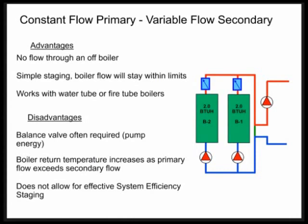The advantages being there's no flow through an off boiler. There's simple staging. Boiler flow will always stay within its limits. Some of the advantages, no flow through an off boiler. Whenever you cut a boiler off, the pump goes off. So you don't have those stack losses that can happen on a boiler when you have flow rate going through the boiler and it not running. Simple staging. The boiler is always going to stay within its flow limits. You don't have to worry about two pumps running through a boiler or a pump only going half low through a boiler. You just nice, simple, turn the boiler on, the pump comes on, turn the boiler off, the pump goes off. Another advantage is that this system, this layout will work with water tube or fire tube products. It works great with condensing. It works great with non-condensing. You can apply just about any product in constant flow primary or variable flow secondary.